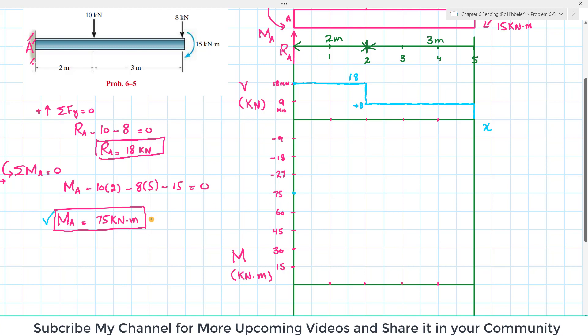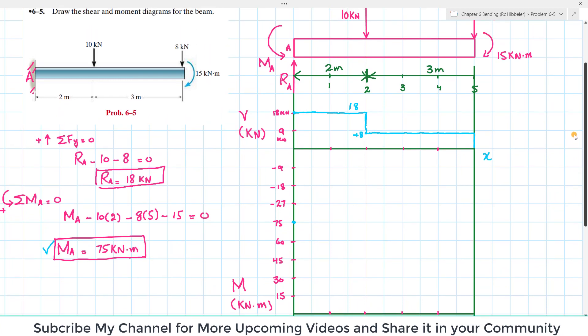At point A the moment is 75. From point A to this point, the area under the shear force is rectangular with distance 2 and 18, so 36. At this point this will be 36 kN·m.